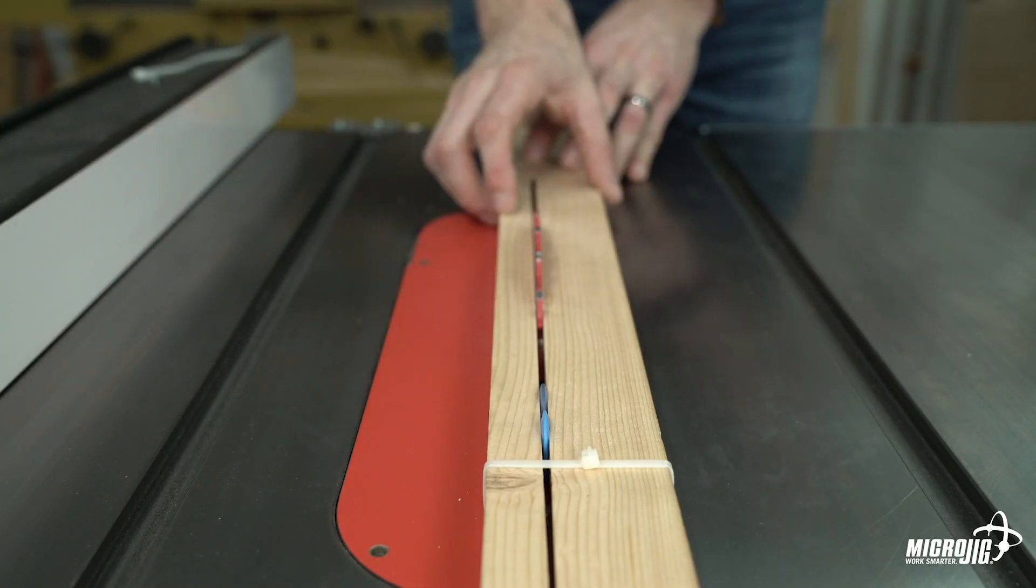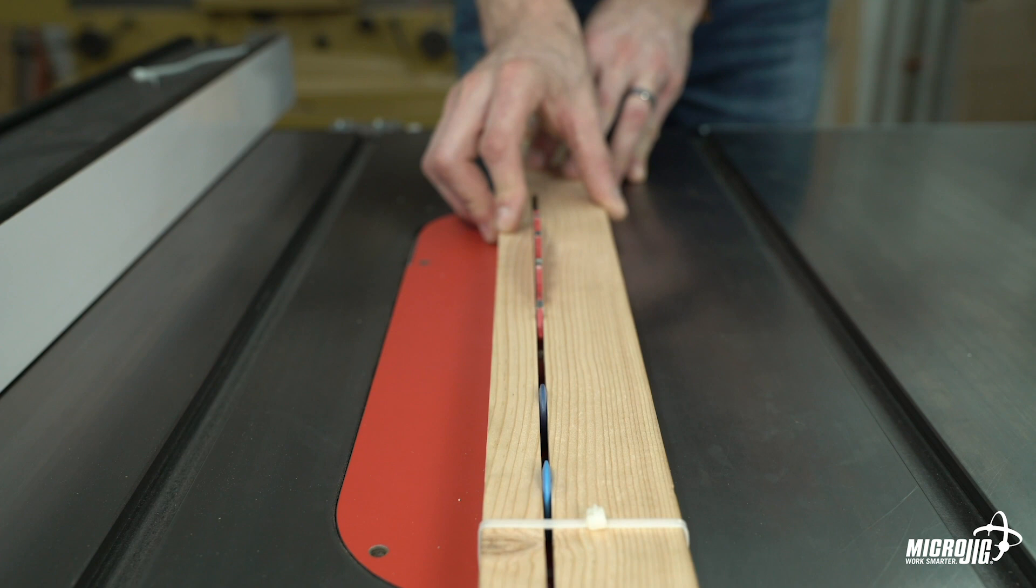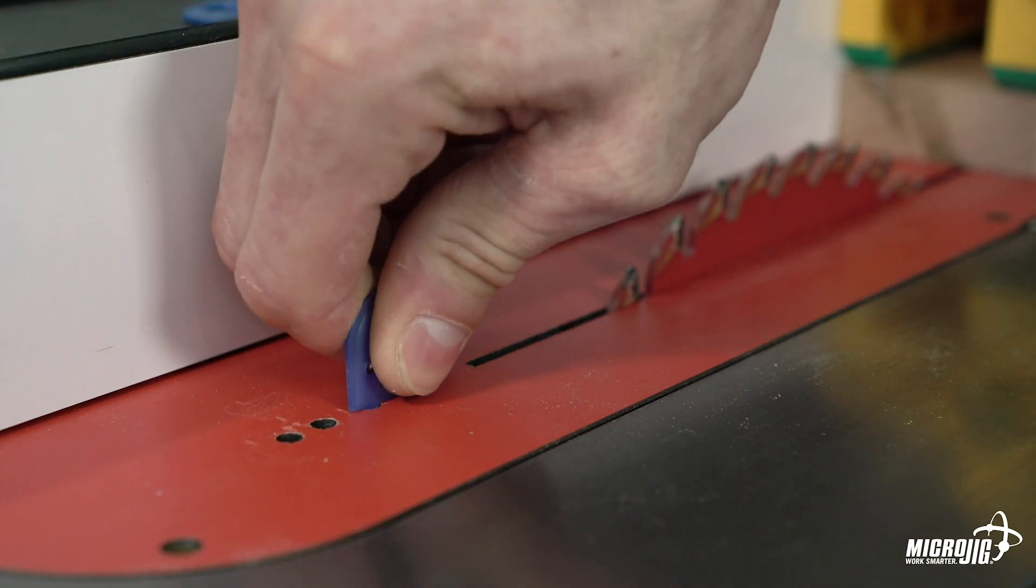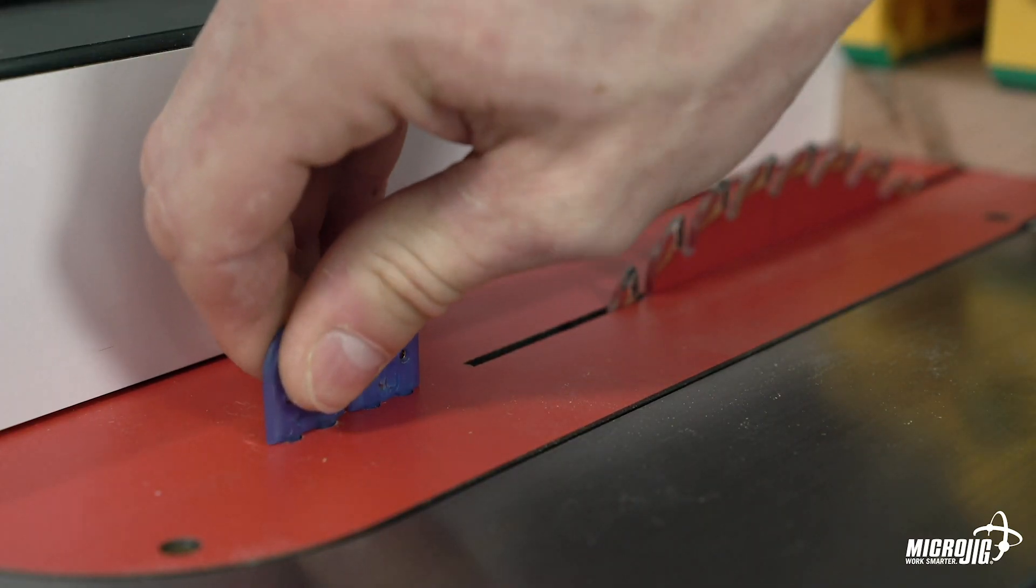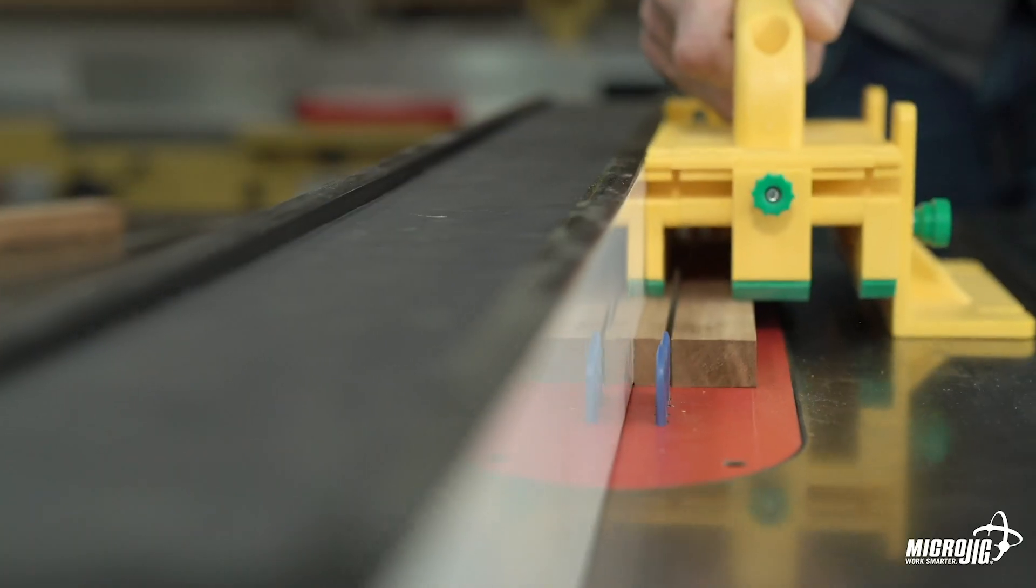This keeps the kerf spread apart and serves as an indication that you're working with reactive wood. The MJ Splitter Steel Pro features an extremely rigid steel core and is available in a thin kerf and a full kerf version.